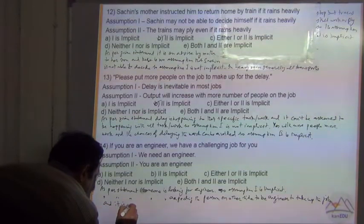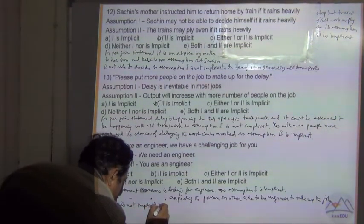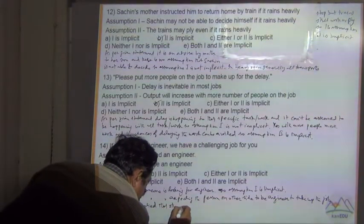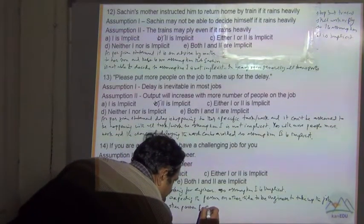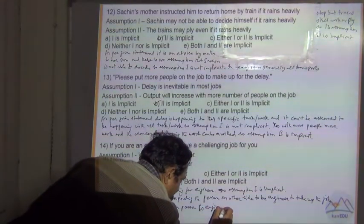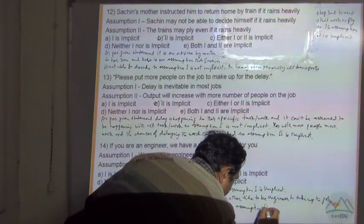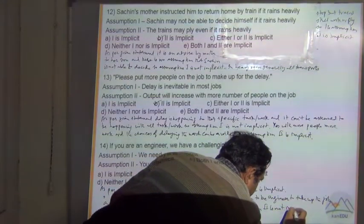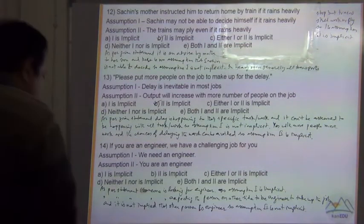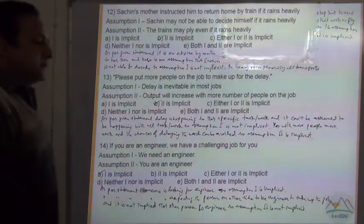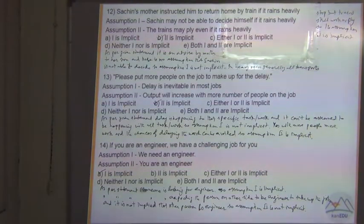But it is not implied that other person is an engineer. So assumption 2 is not implicit. So only assumption 1 is implicit. So answer is A.